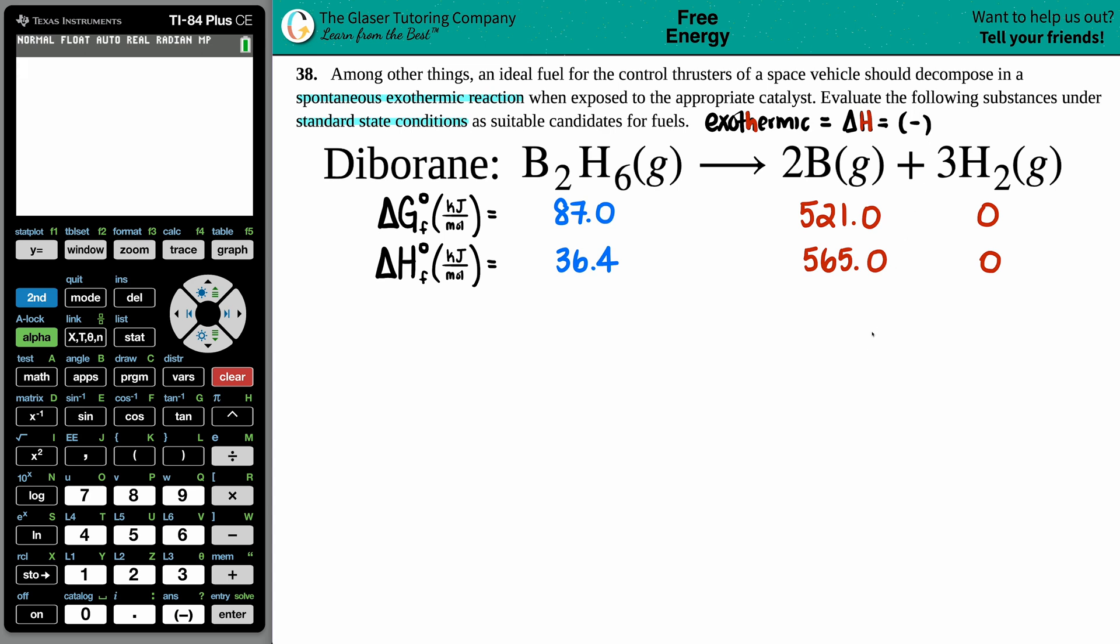Now since we're using standard state conditions that means that I can go into the back of a textbook to find out what the delta H values are for each individual component. I do have the delta G values here because that's the spontaneous part of the question, but first we're going to work with exothermic and see if this is exothermic.